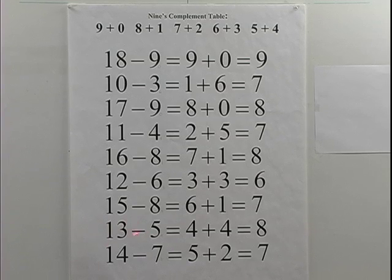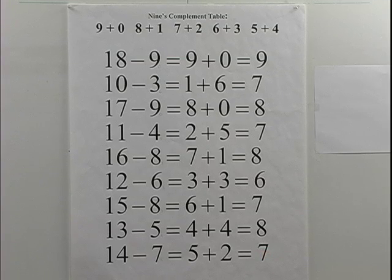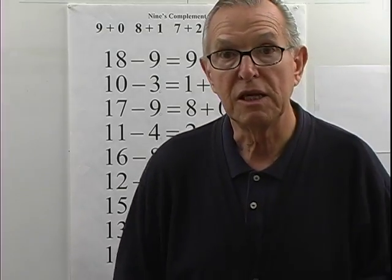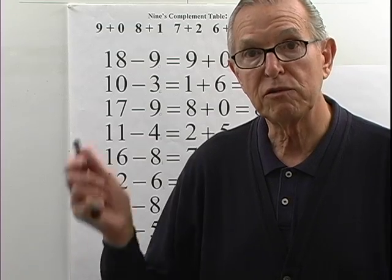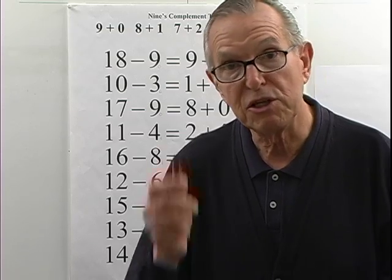Thirteen minus five: one and three is four; nine's complement of five is four; four plus four is eight. Thirteen minus five equals eight. Correct. Fourteen minus seven: one and four is five; nine's complement of seven is two; five plus two equals seven. Fourteen minus seven equals seven. Correct. In every case, using our algorithm for subtraction by addition and the nine's complement procedure, we found the correct difference with only one operation.